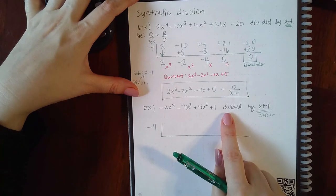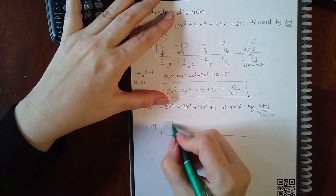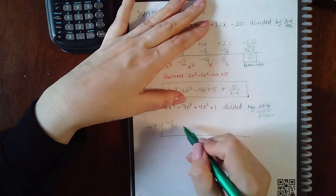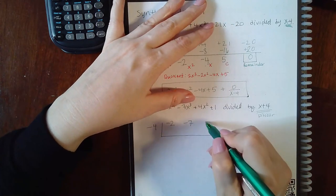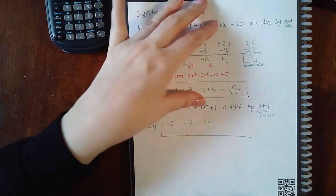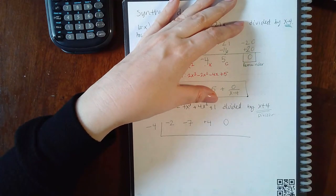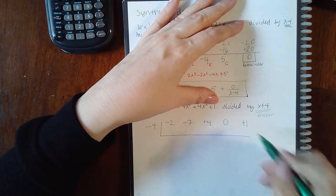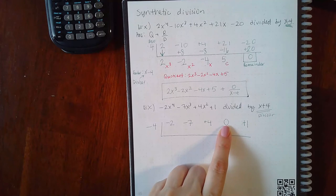This is in descending order, however there's a term missing. I have negative 2 as the coefficient for x to the fourth, negative 7 for x cubed, positive 4 for x squared. I have nothing for the coefficient of x, so I have to put a 0, and then I have positive 1 as my constant. You must put in zeros for missing terms.